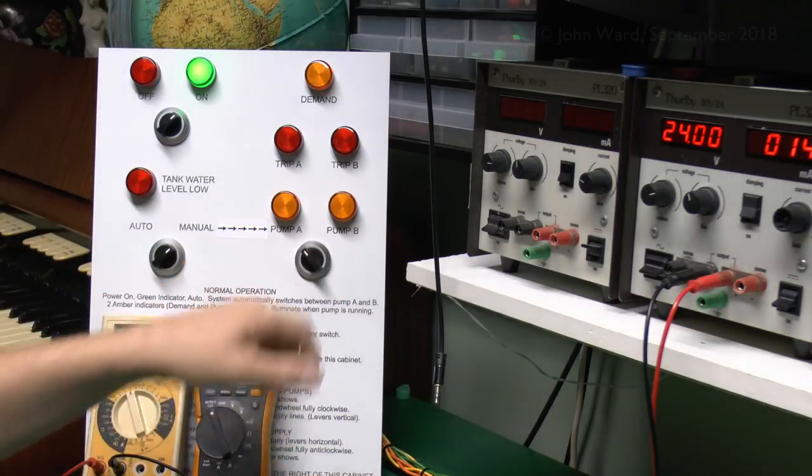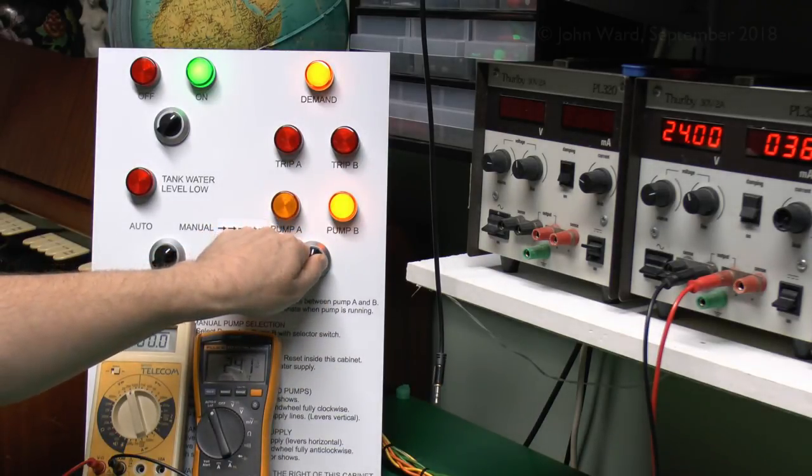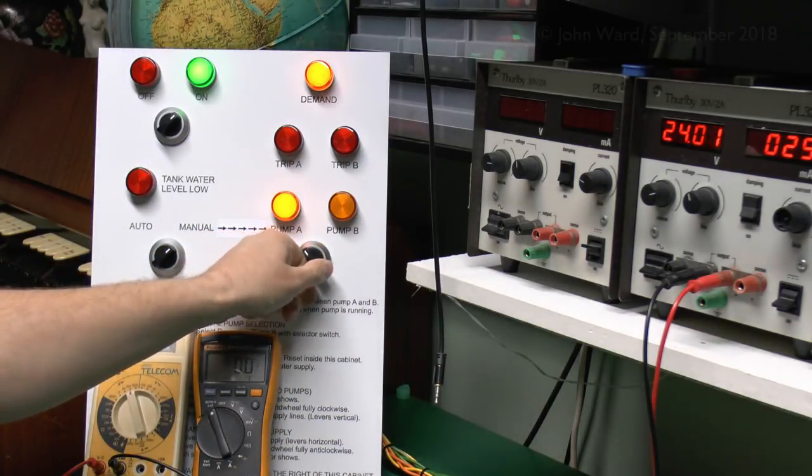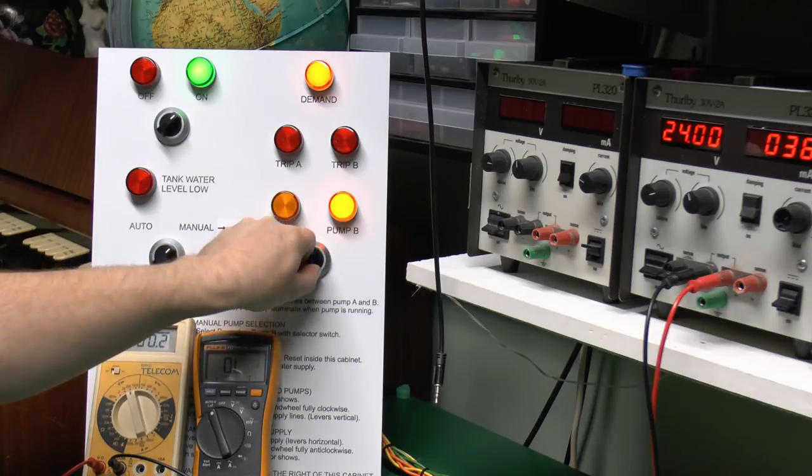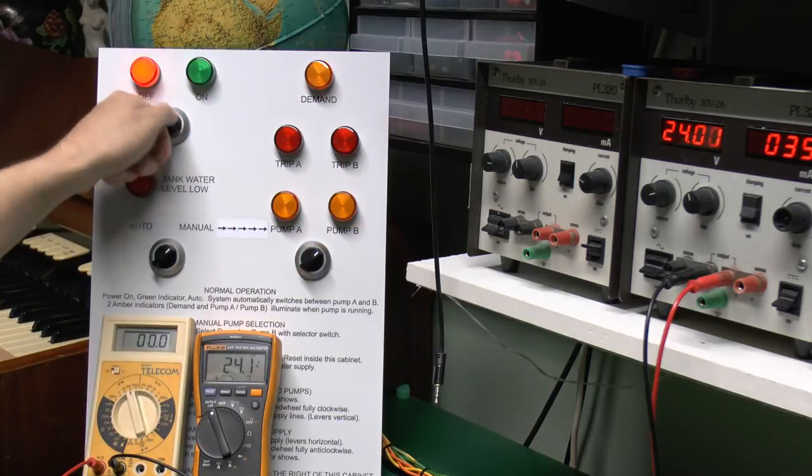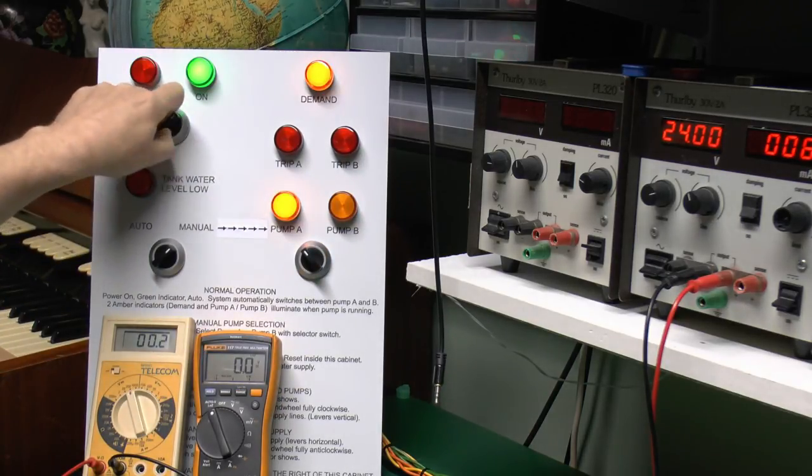And then if we go to manual with no demand, then we shouldn't see anything at all. We should just see pump A come on, we've got the 24 volts there. And on pump B we should get the 24 volts there, which drops away when the demand is not required. And we should find we can't have both at the same time because the switch is one breaks before the other one. And in the off position we shouldn't get anything, which of course we don't. That's fine.